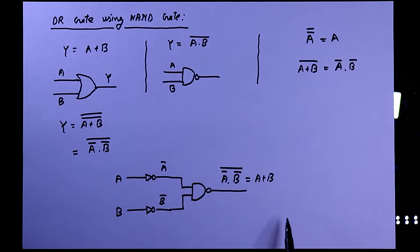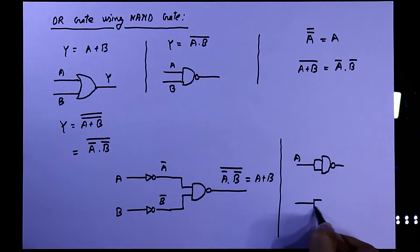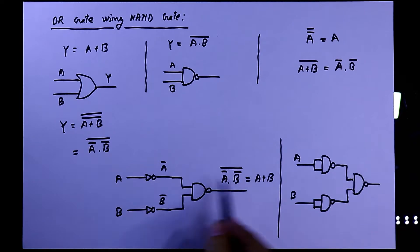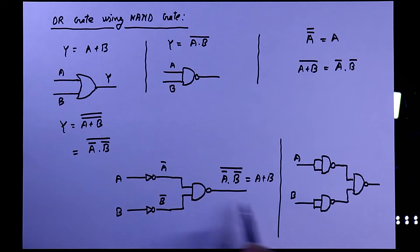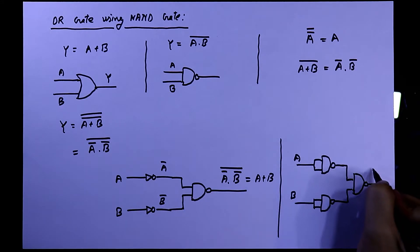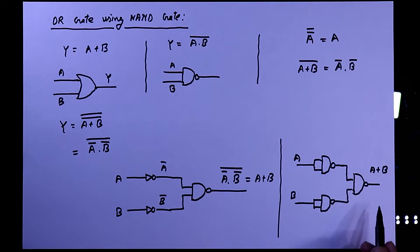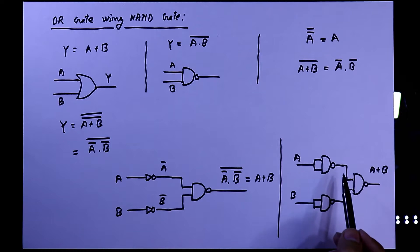So it is working as an OR gate, but we have to design this using only NAND gates. So instead of NOT gates, we'll use NAND gates — here for input a and here for input b. Instead of NOT gates I have used NAND gates, and the output will be a + b. So this is our OR gate using NAND gate. I already explained how it works as a NOT gate — link in the description below.